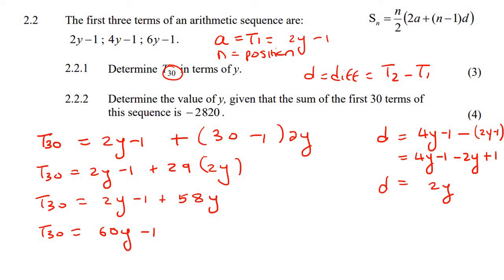So they tell us that the sum of the first 30 terms, okay, so is minus 2,820. So we can say, we can say minus 2,000, let's give us a bit more space, minus 2,820 equals to n. Now n is the number of terms that they want us to use, they said the first 30.